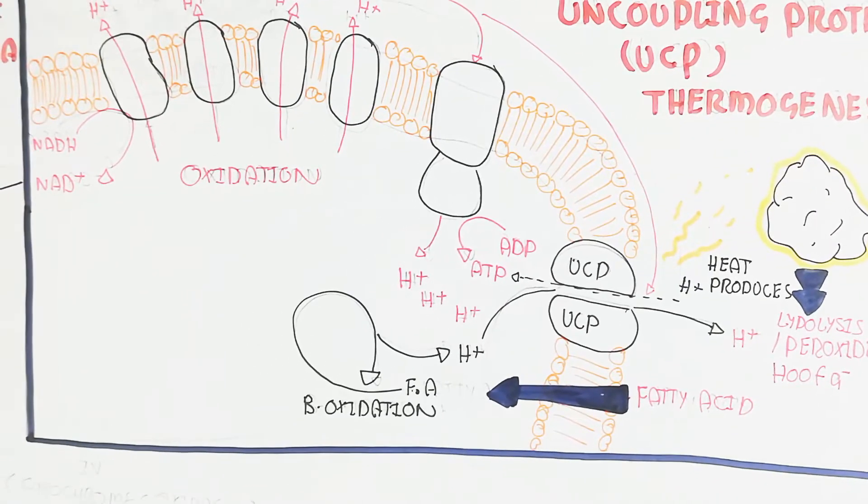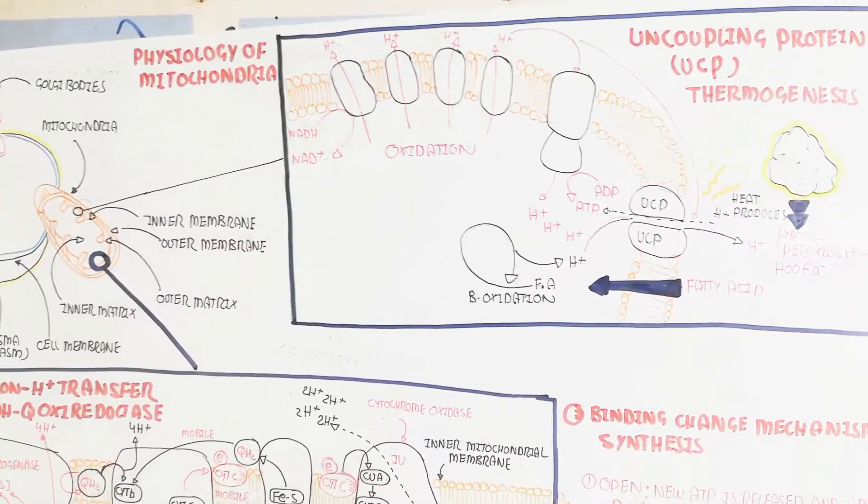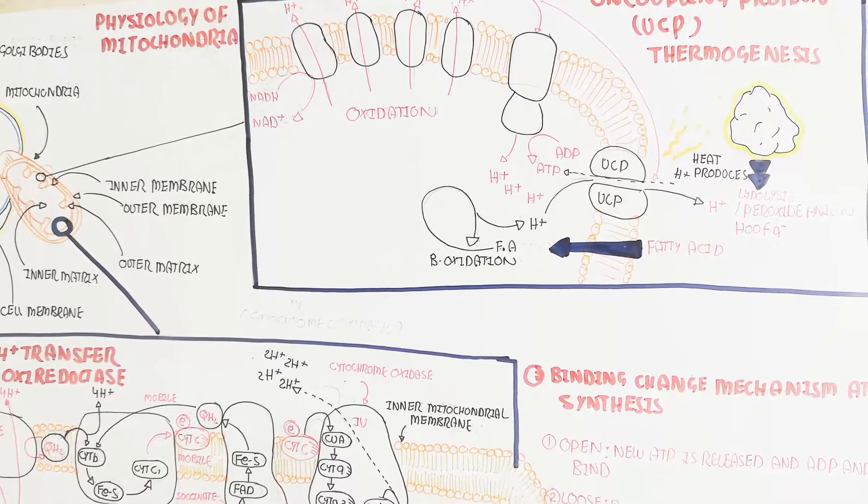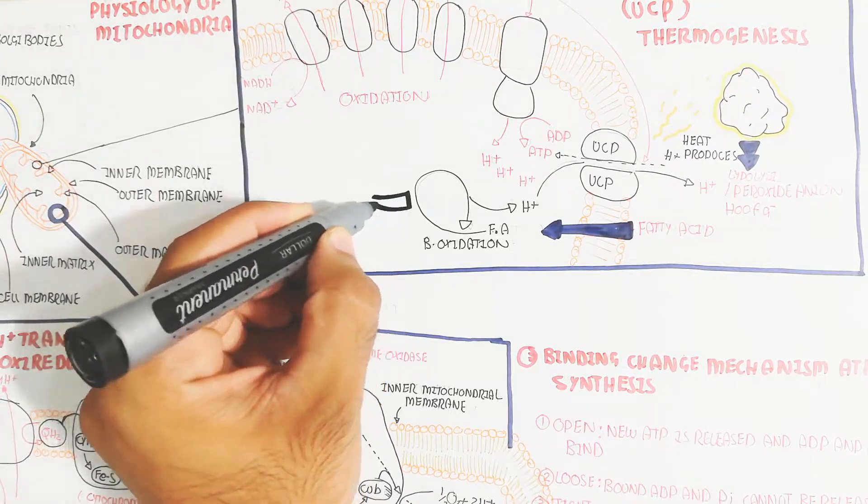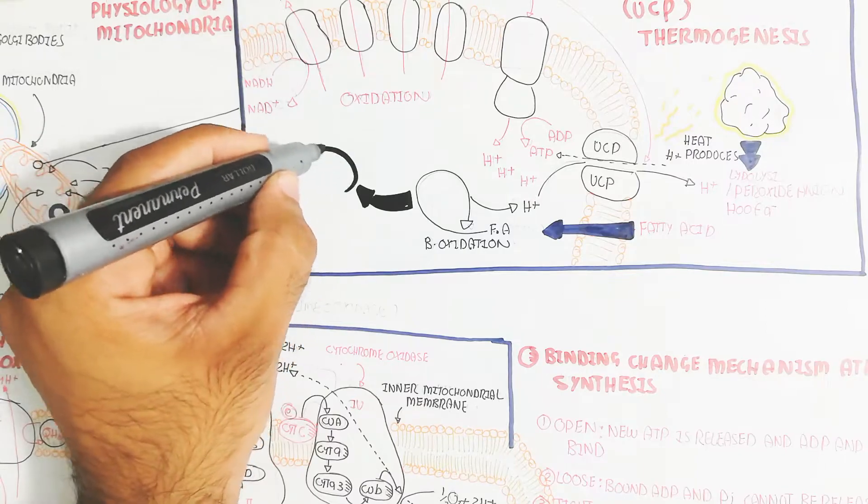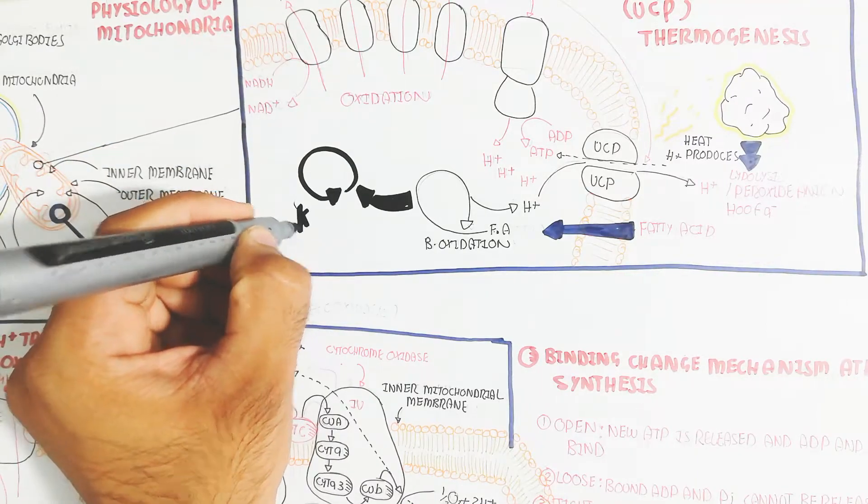After lipolysis, the triacylglycerol will convert into fatty acid and glycerol. And the Krebs cycle is used to produce NADH for further processes and production of more heat.